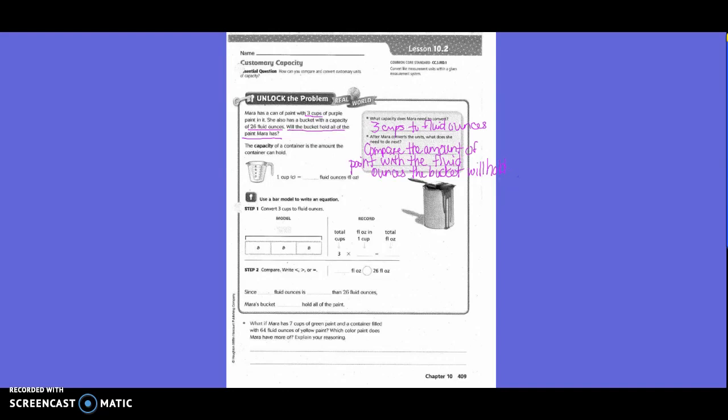One cup equals how many fluid ounces? Remember, this is where you can use your math folder. Eight. We're converting three cups to fluid ounces. We know that there are eight fluid ounces in each cup, so they did the little model and put eight in each little box because there's three of them. So eight times three is 24. Over here they did three times eight equals 24.